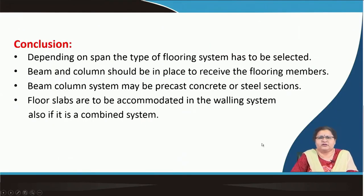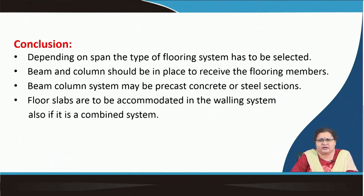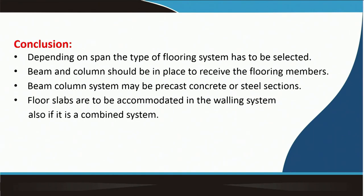To conclude, depending on the span, the type of flooring system has to be selected. Beam and column should be in place to receive the flooring member — you cannot start placing floors without the beam-column system in position. The beam-column system may be precast, steel section, or brick wall. Floor slabs are to be accommodated in the walling system if it is a combined system; otherwise they may rest independently on the structural system with walling done using brick, concrete masonry units, or autoclaved aerated concrete blocks. With this, we finish lecture 4. Thank you.